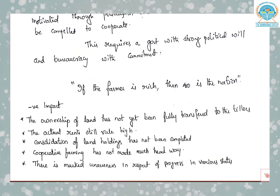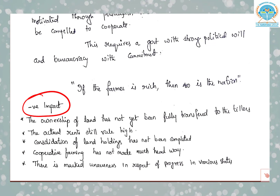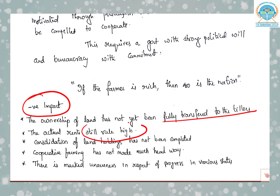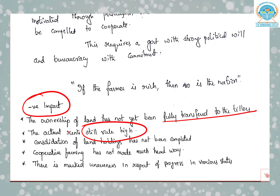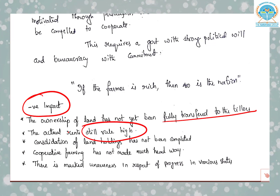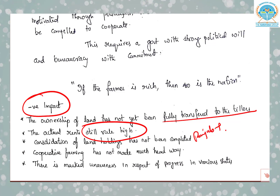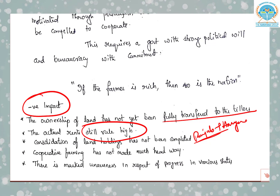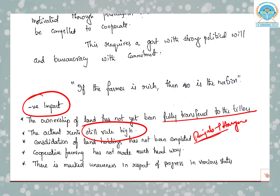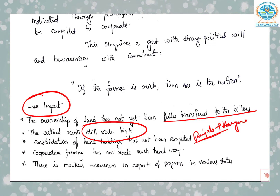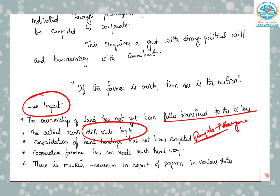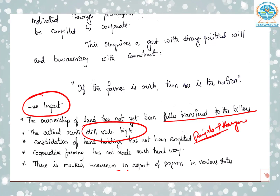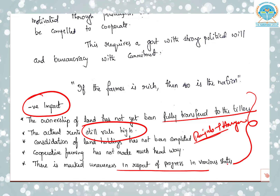Looking at the negative impact: ownership of land has not yet been fully transferred to the tillers and actual rents still remain high. Consolidation of land holdings has been completed only in a few areas such as Punjab and Haryana, and cooperative farming has not made much headway. There is marked unevenness in the progress of land reforms across various states, with significant regional disparities in implementation.